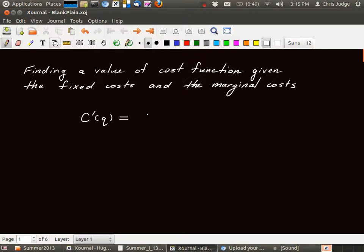Maybe it's equal to 26Q squared minus 3 over 2Q. And we're also going to be given the fixed costs. What are fixed costs? Well, that's C of 0. So we're given C of 0 is, say, 5,000.